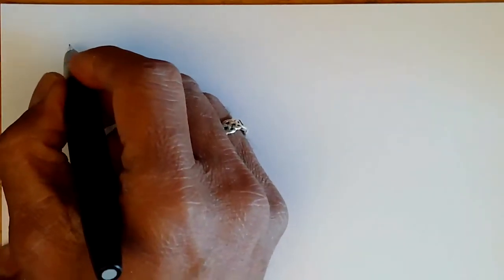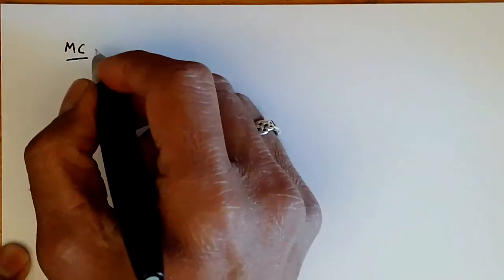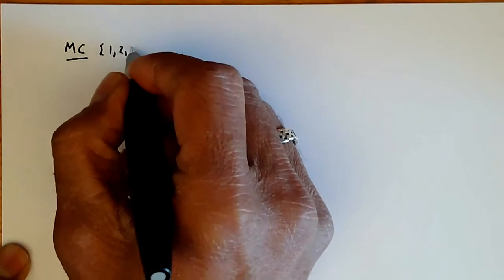So let's say that we have some Markov chain, and it has a trajectory. So let's say the Markov chain is over the states one, two, three, four.